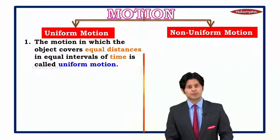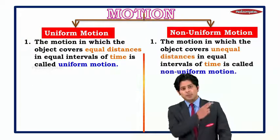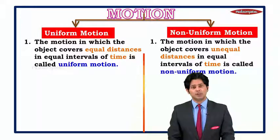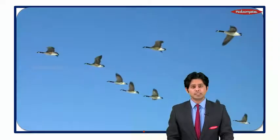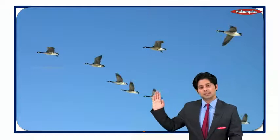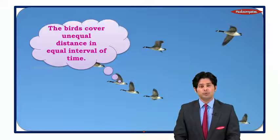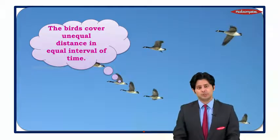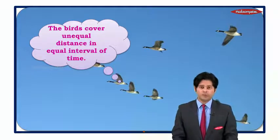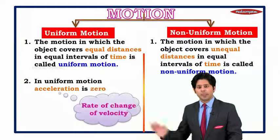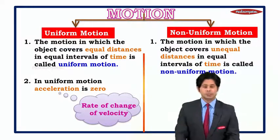The second type is non-uniform motion: the motion in which the object covers unequal distance in equal interval of time is called non-uniform motion. For example, birds flying in the sky cover unequal distance in equal interval of time, so they are said to be in non-uniform motion.